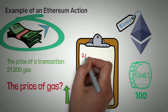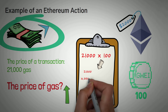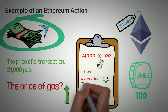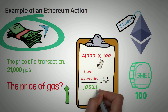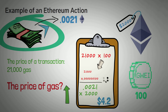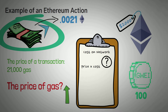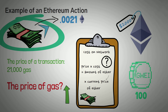So the cost of the transaction is 21,000 gas times 100 GWEI. If we do 21,000 times 0.000000100, because that's 100 GWEI, we get the amount in Ether, which comes out to 0.0021 Ethereum. To figure out how much actual cash that is, you take 0.0021 and multiply it by the price of Ethereum, which is $2,000, and you get $4.20. So to find the cost of any action on the Ethereum network, you take the gas cost of the action times the gas price in GWEI — that gives you the amount of Ethereum — then multiply by the current price of Ether to get USD.